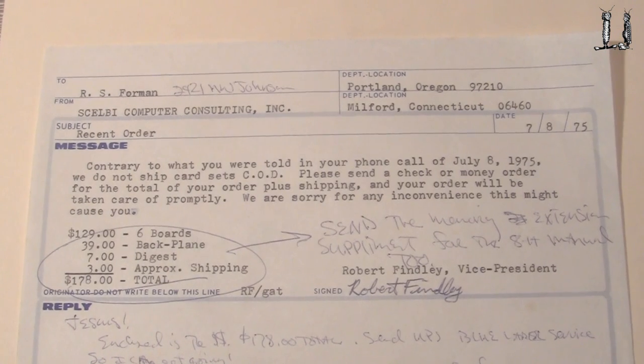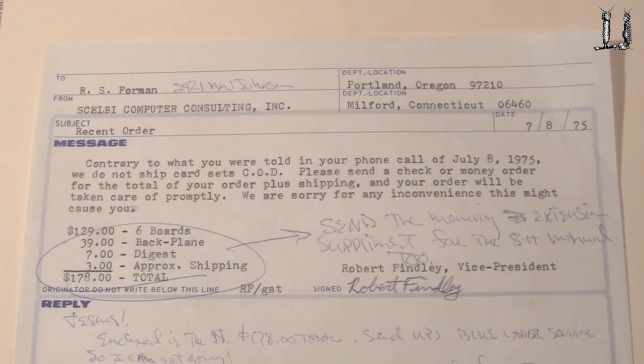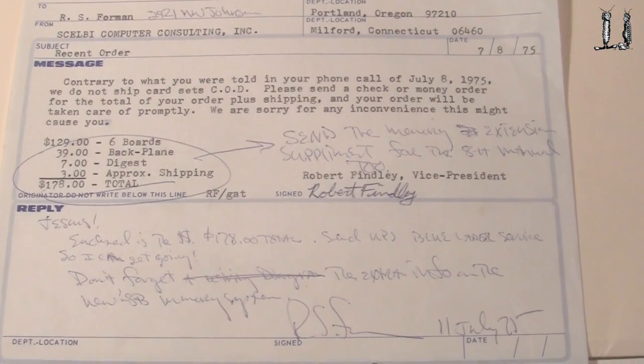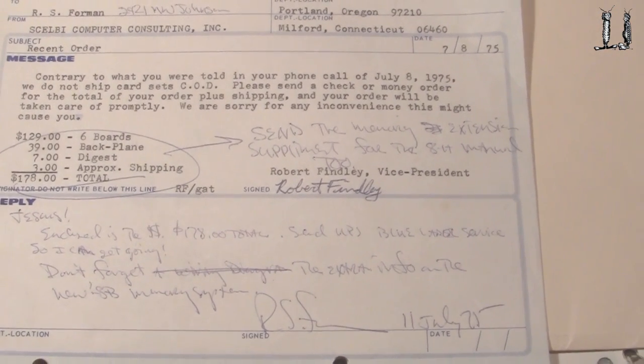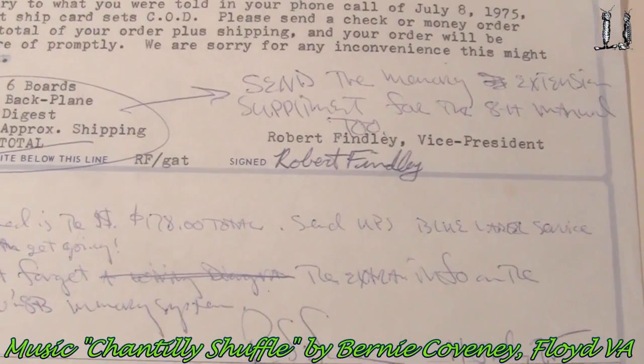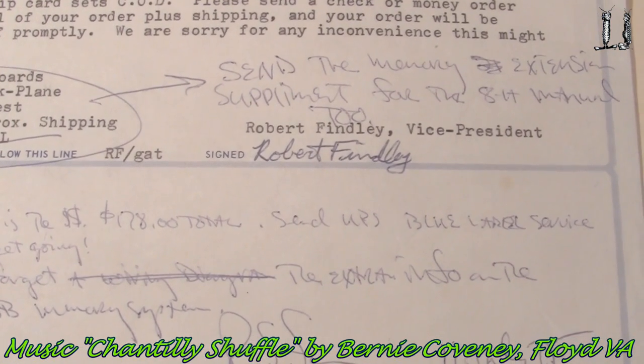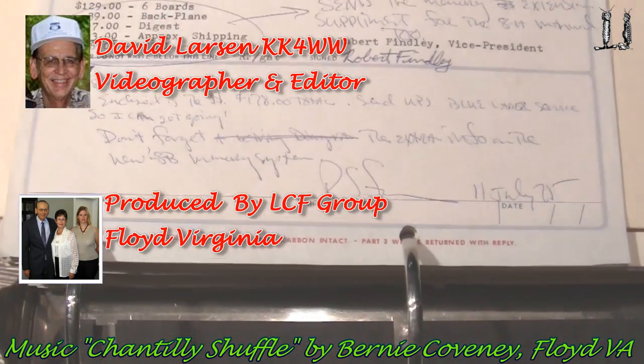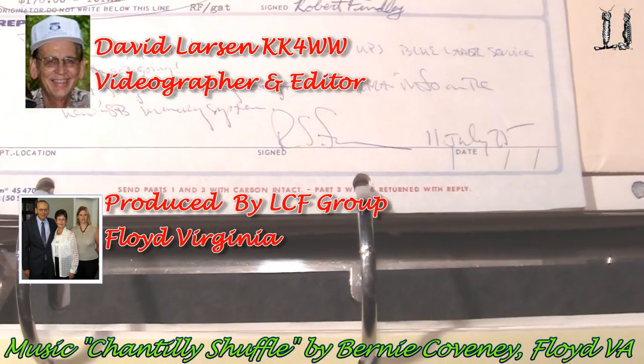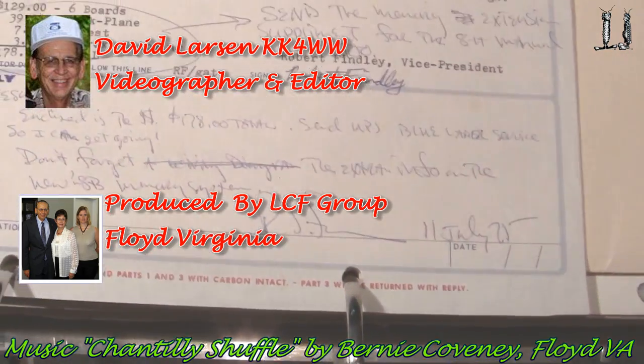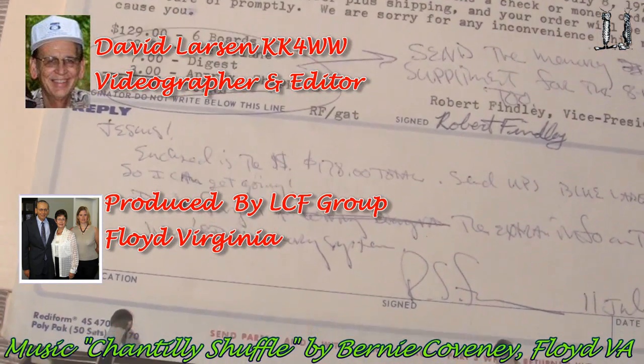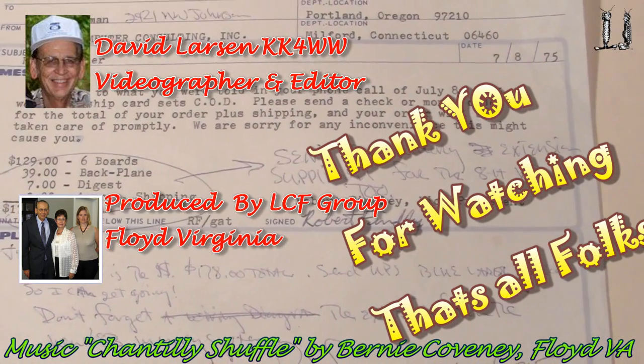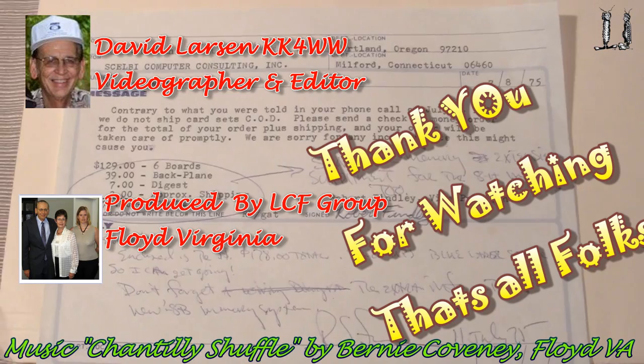Here's a very interesting thing. I'm certainly glad to have this. This original purchase order for the six cards. Dated 7, 8, 75. Signed by Robert Finley. Robert was the co-founder of Selby Computing. So here's the order for the original six cards.